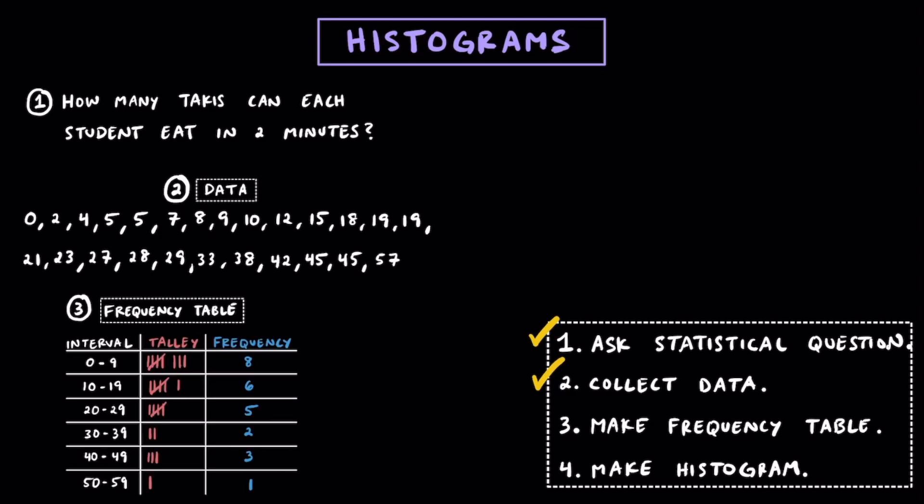Following, we're going to create a frequency table, and typically we want 4 to 5 intervals, if not more, so we have 6 here, and that's pretty good, and we're going to see how many students fit into each of these intervals for how many takis they ate.